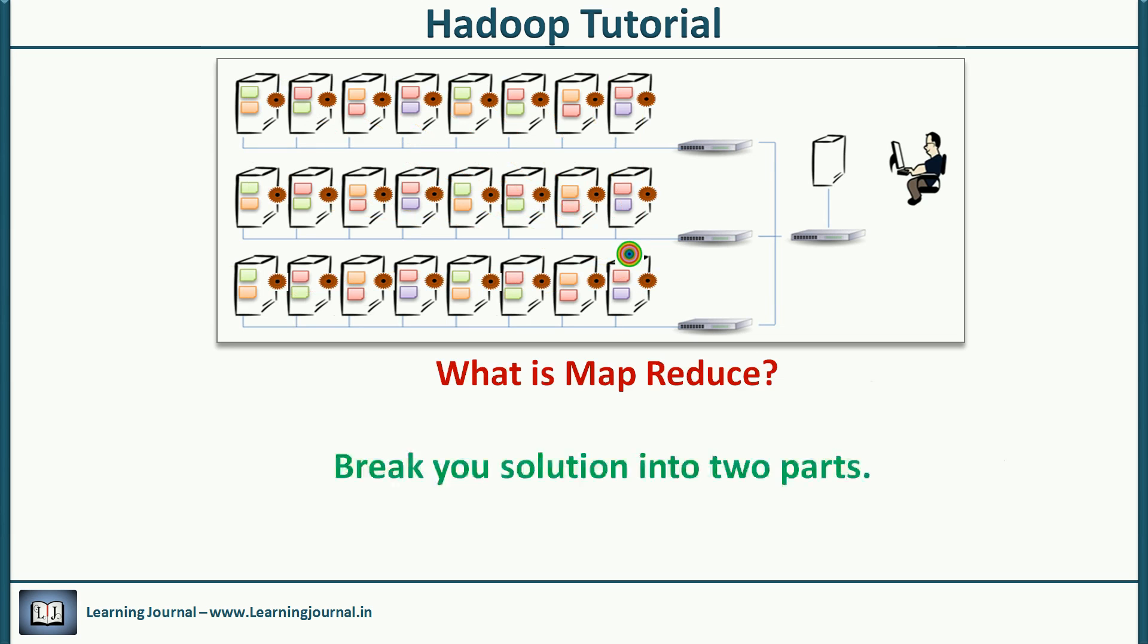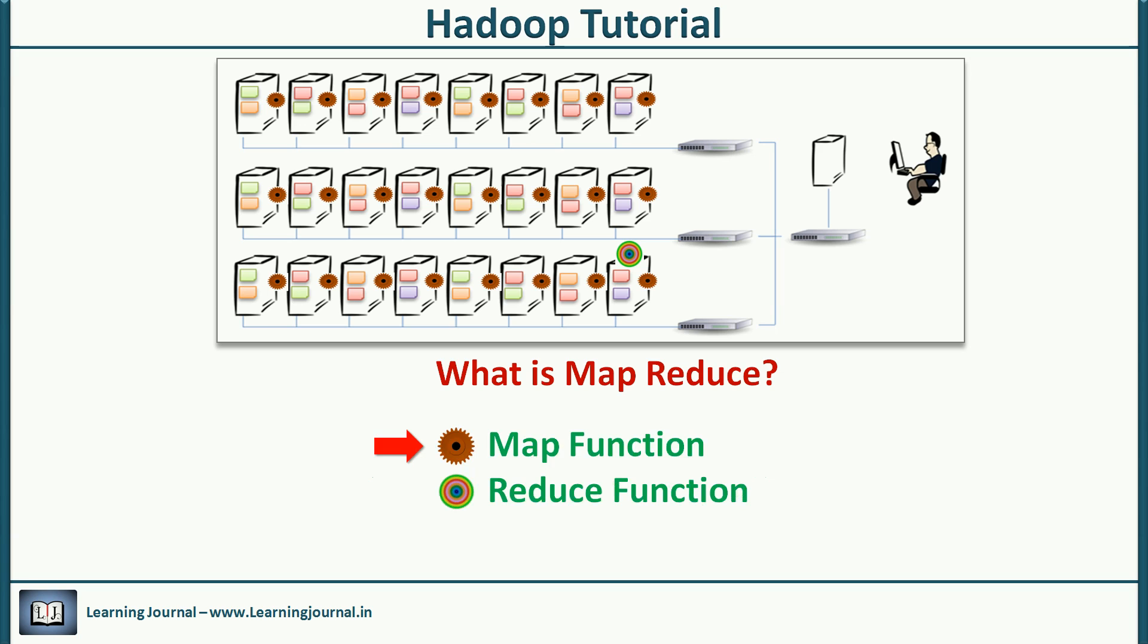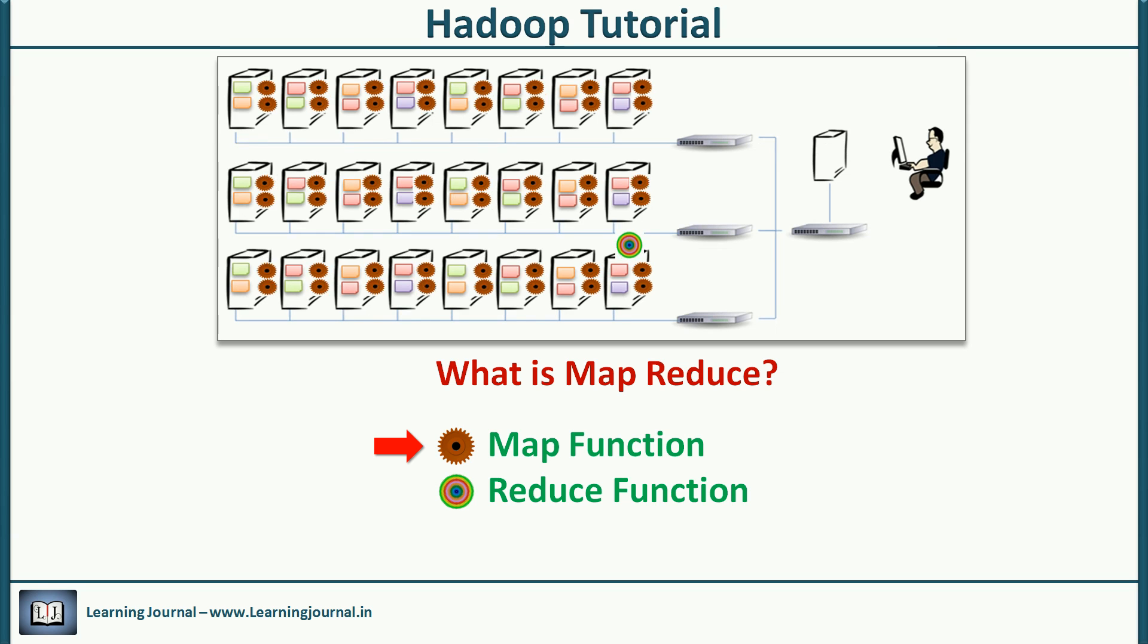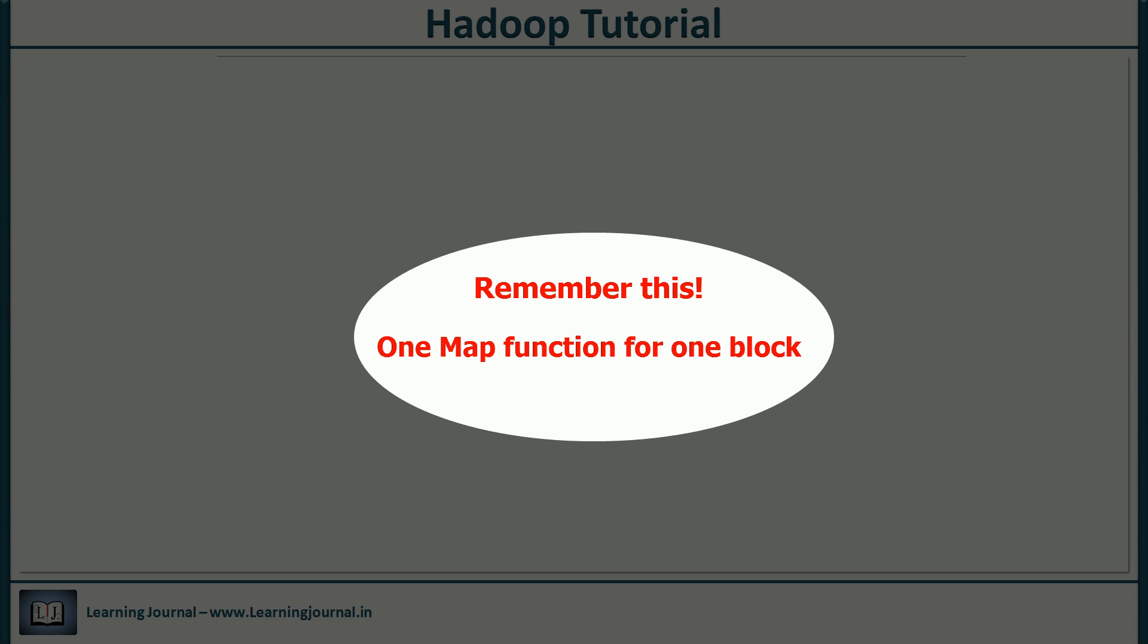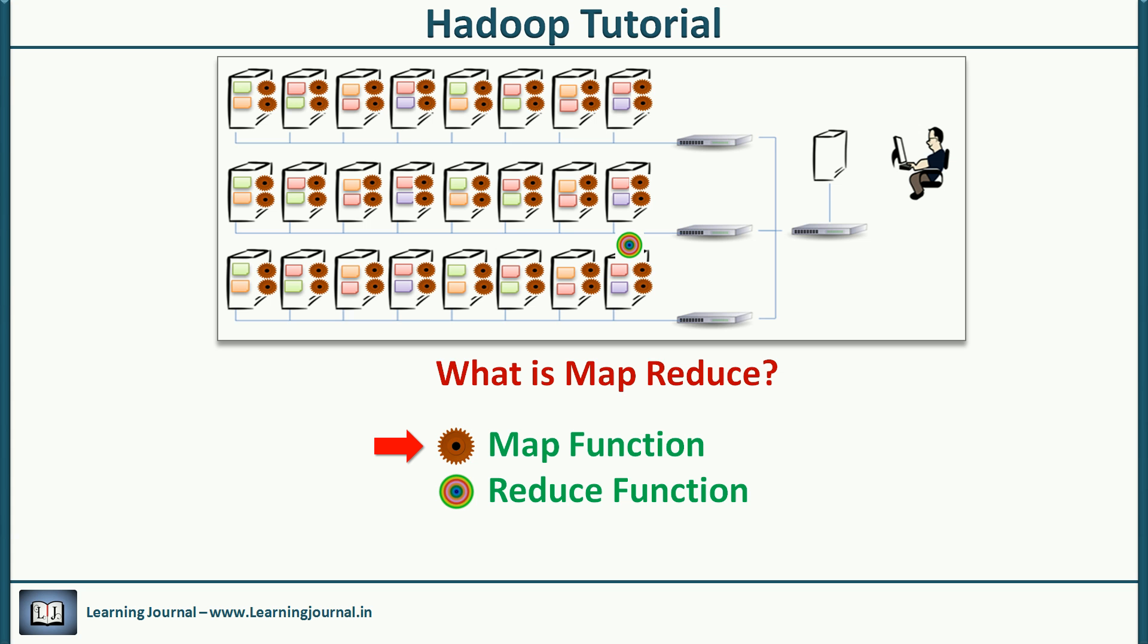I think you got the core of it. We've broken our line counting problem into two parts. Let me give a name to both parts. The first part is called the map function. We execute this on each computer. In fact, we run a map function for each data block. So if we have a thousand blocks, we run a thousand map functions, one for each block. The map function will simply count the lines in the block. The second part is called the reduce function. We execute it on a single computer. The reduce function will sum up the individual totals and show us the final total.